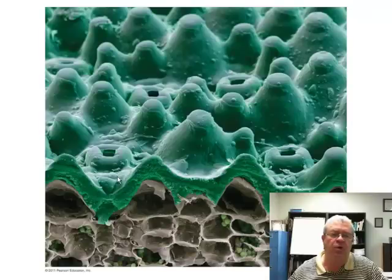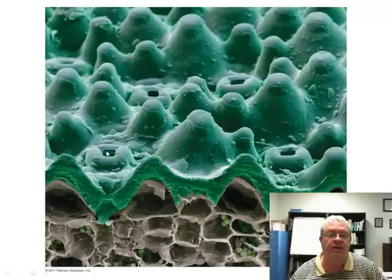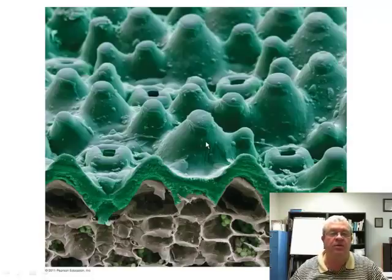Let's take one more look at this slide. Here's a picture taken with an electron microscope. You can see there are openings in the leaf because the leaf has to breathe, but other than that it's covered with a layer of wax. It looks pretty thick in this picture. And so — the waxy cuticle on the aerial parts.